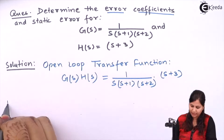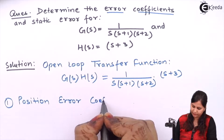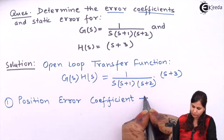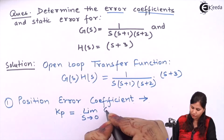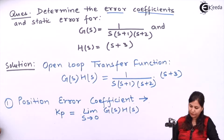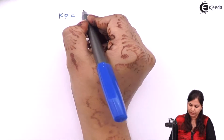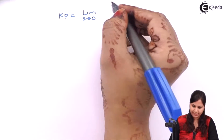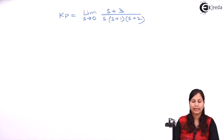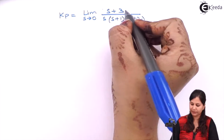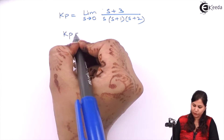Let us start with our first error coefficient, that is the position error coefficient. This position error coefficient Kp is given by the limit as S tends to 0 of G(s)H(s). Substituting the value, Kp equals limit S tends to 0 of (S+3) upon S(S+1)(S+2). Applying the limit, we get 3 divided by 0, so Kp is equal to infinity.